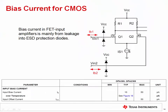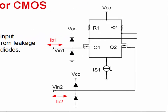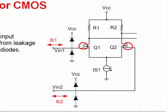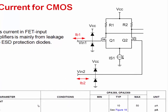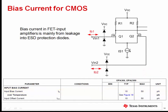In the case of MOSFET or JFET op amps, the input bias current is primarily due to the leakage of the input ESD protection diodes. The gate of the input MOSFET transistors has extremely low leakage, so it doesn't contribute significant bias current. The OPA369 has 50 picoamps max of input bias current.